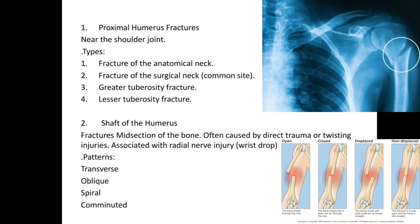Proximal humerus fractures occur near the shoulder. Types include: fracture of the anatomical neck, fracture of the surgical neck (the most common), greater tuberosity fracture, and lesser tuberosity fracture.